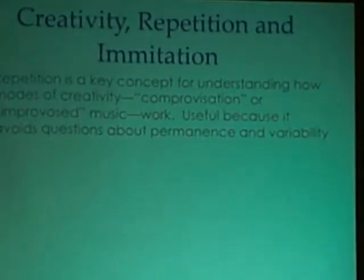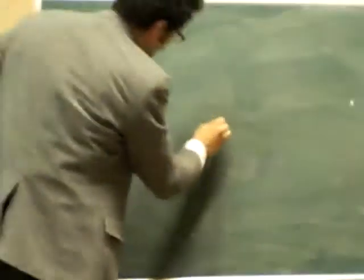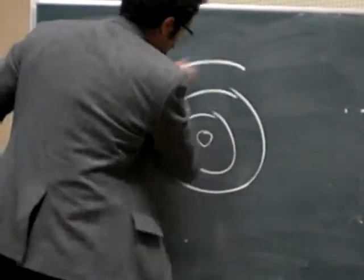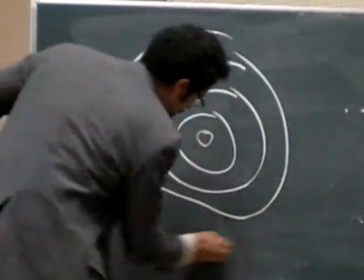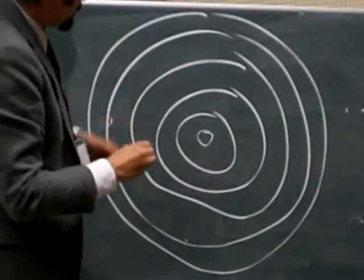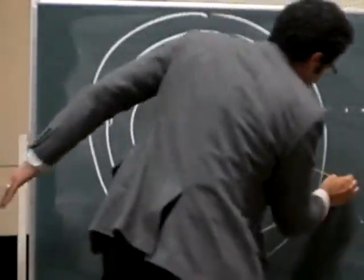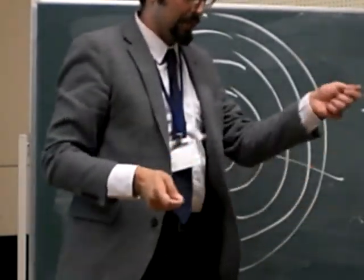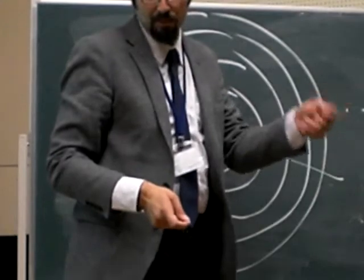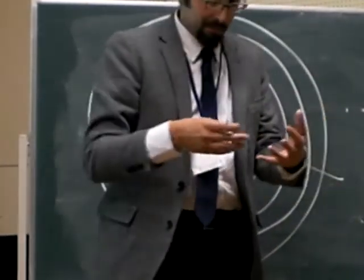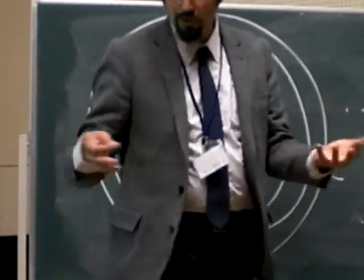We usually think about repetition in jazz at the very lowest level. But actually there are a bunch of rings. At the lowest level, there are repetitions of things like beats — cheka-doom, cheka-doom, cheka-doom. That's very repetitive. That's the beat and the groove pattern.